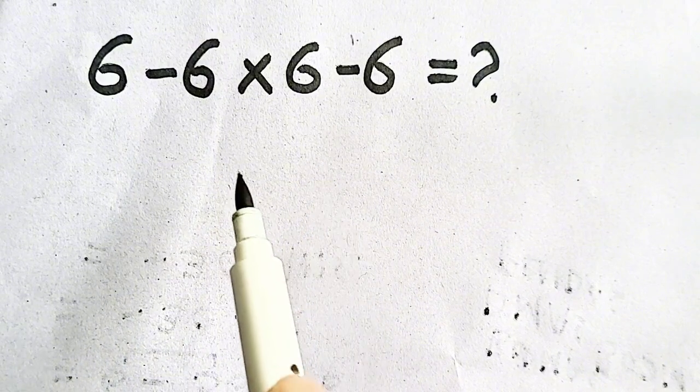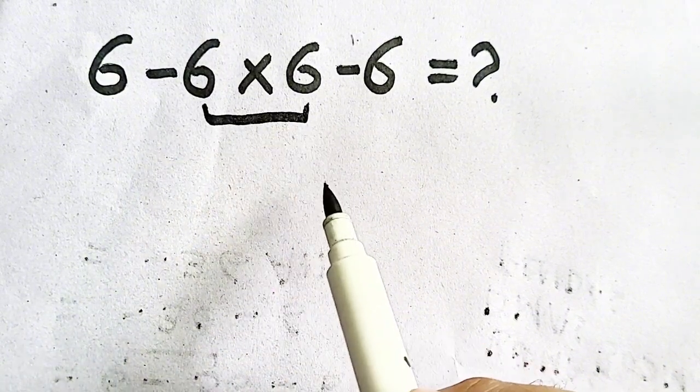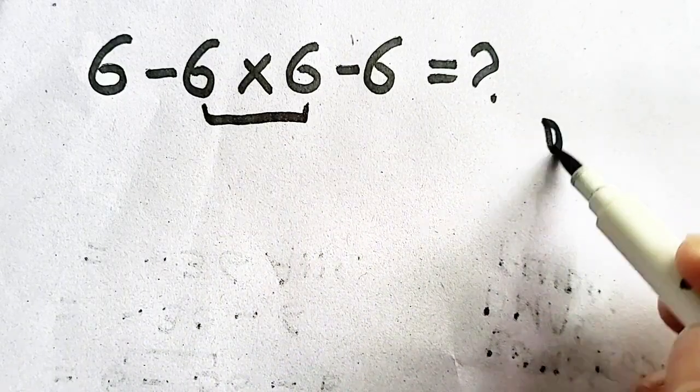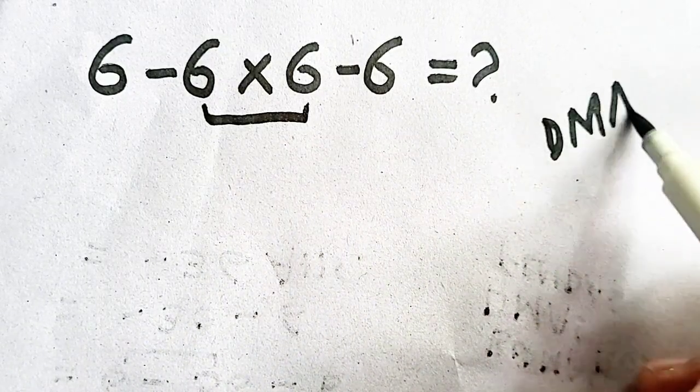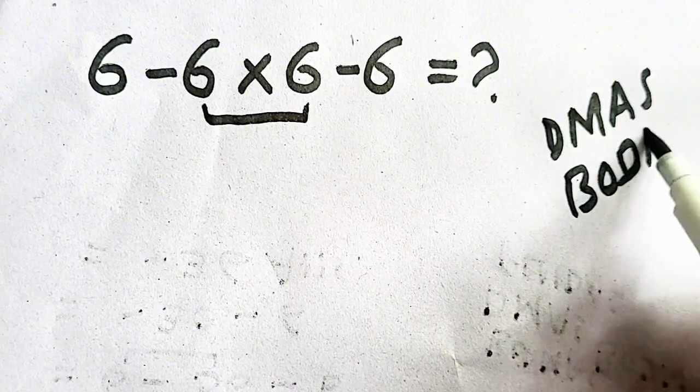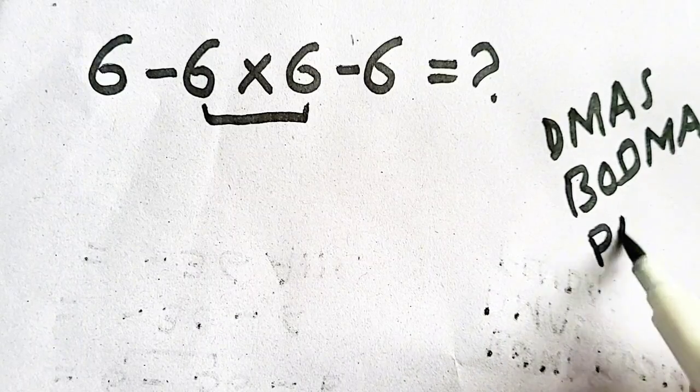So this is the wrong approach. First of all, you have to do six multiplied by six, because according to PEMDAS, BODMAS, all these rules tell us...